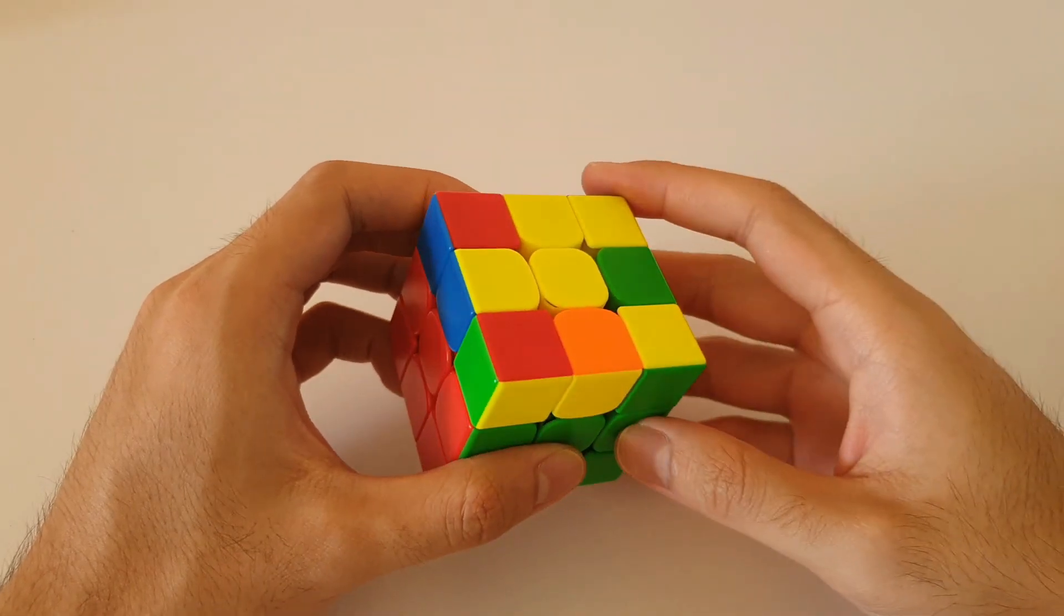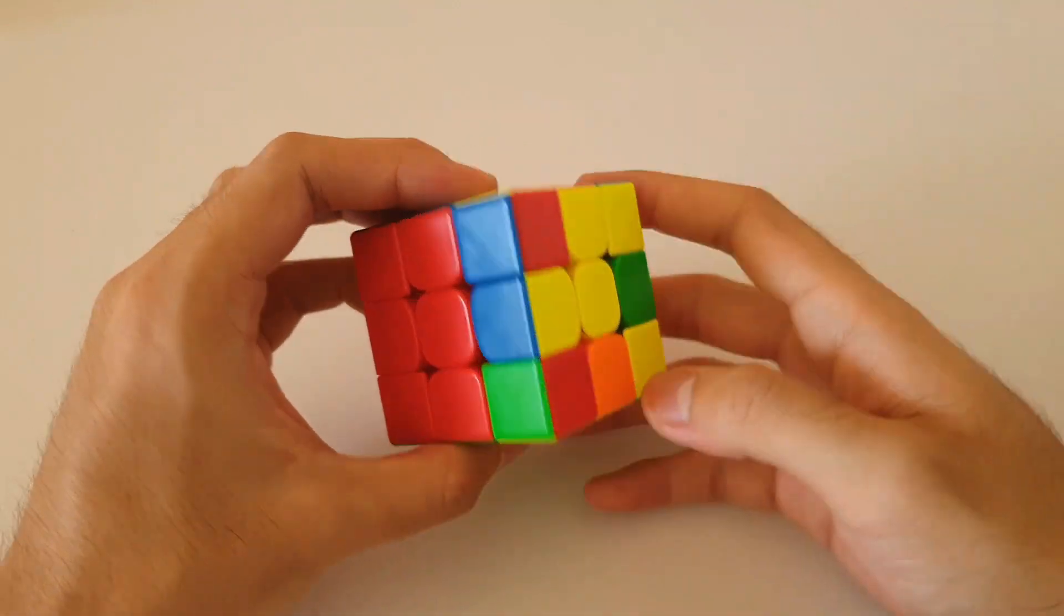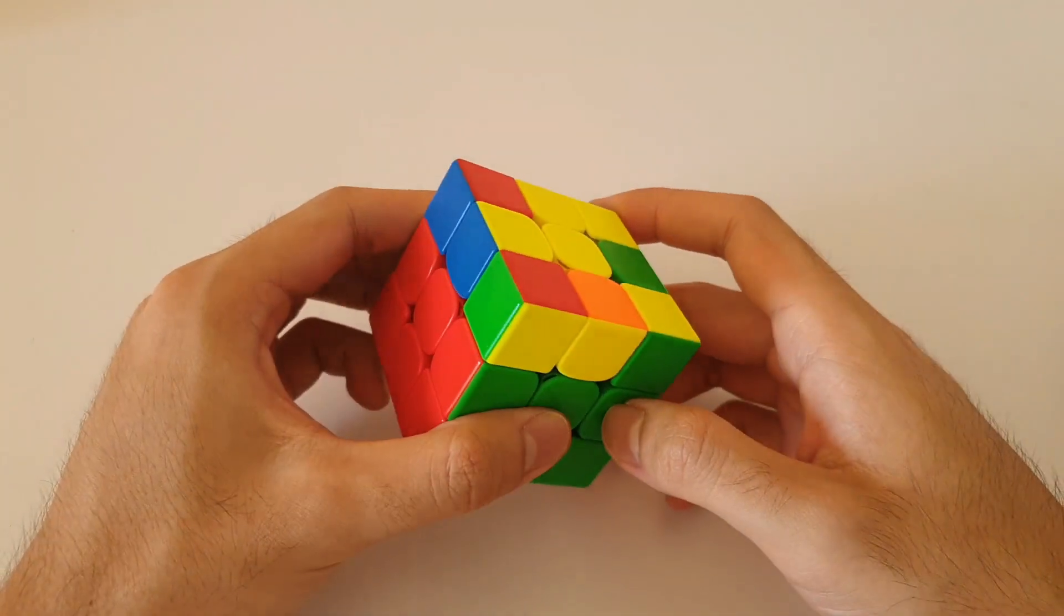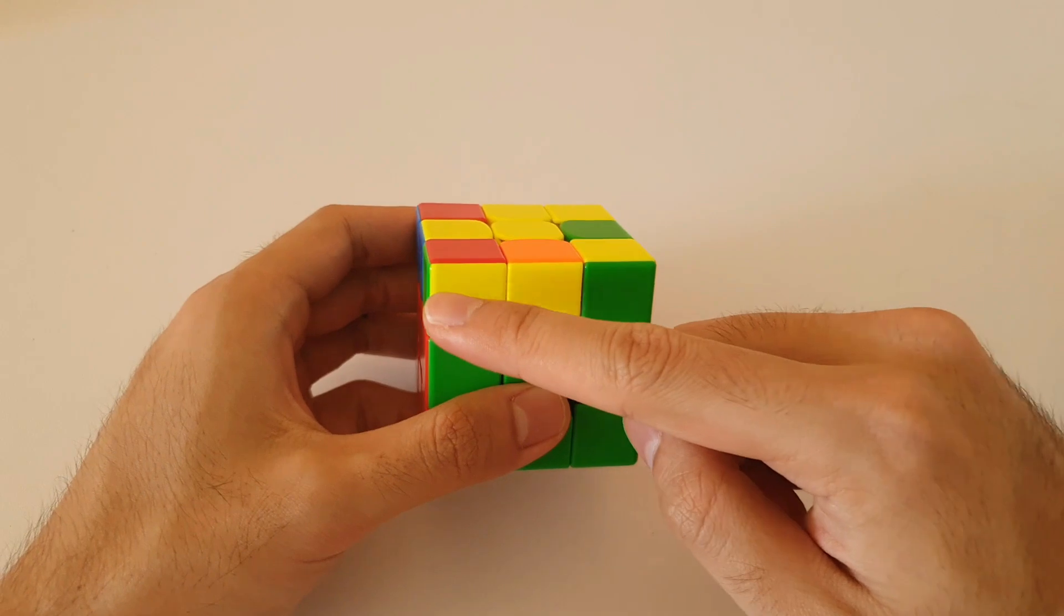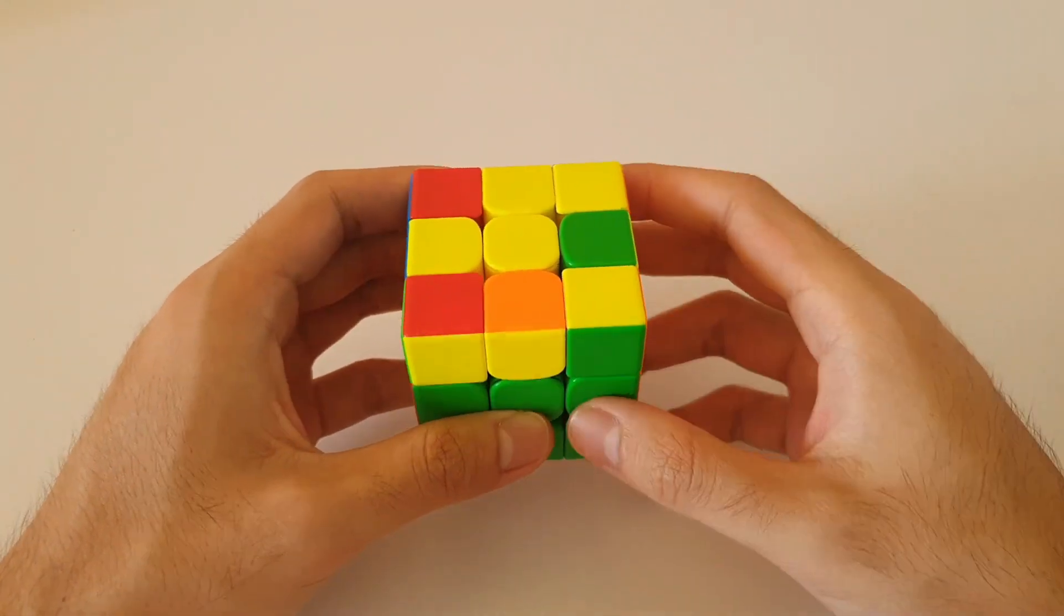Alright, so moving on to our third awkward-shaped case, which would be this one here. These ones are recognized by there not being any headlights on the side. Instead, it's replaced by a 2x1 bar. It's still the awkward-shaped case on the top layer.